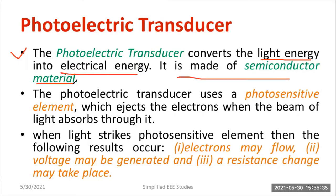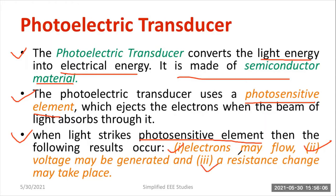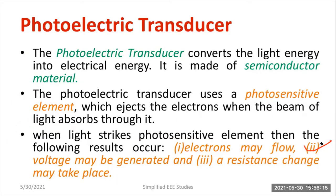It is normally made up of semi-conducting material. Usually, the photoelectric transducers are made up of photo-sensitive material or a photo-sensitive element. Whenever light falls over the material, electrons will be generated — that is a peculiarity of photo-sensitive materials. Whenever light strikes over the photo-sensitive elements, the following observations will be made: electrons may flow, voltage may be developed, current may be developed, or a resistance or conductance change will happen.